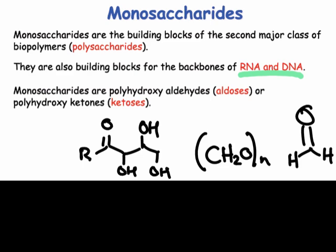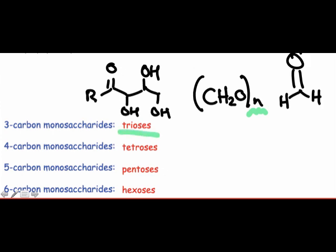We name the monosaccharides according to the value of n in this formula. Three-carbon sugars are also called trioses, four-carbon sugars are tetroses, etc. You should recognize right away that the basic structure of sugars introduces some intriguing stereochemical issues.